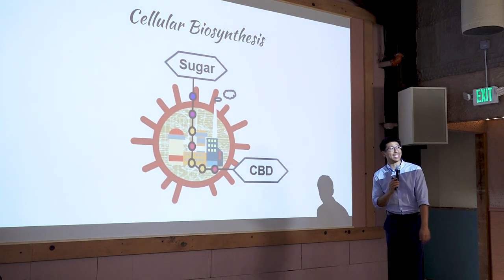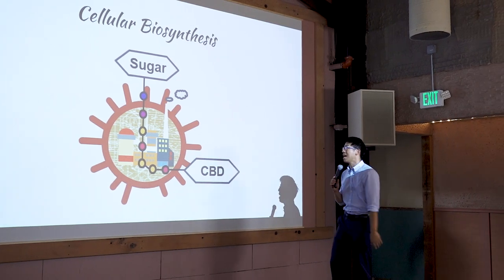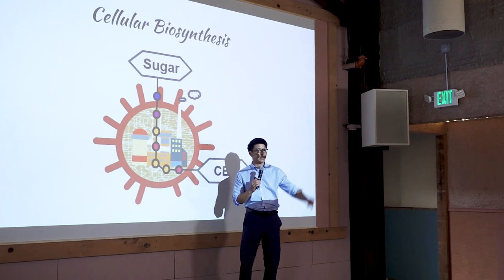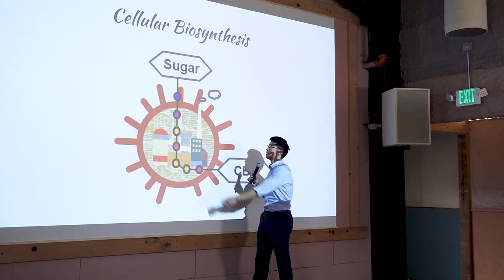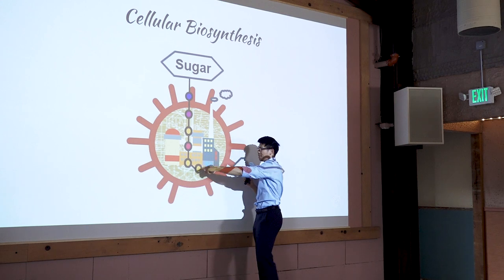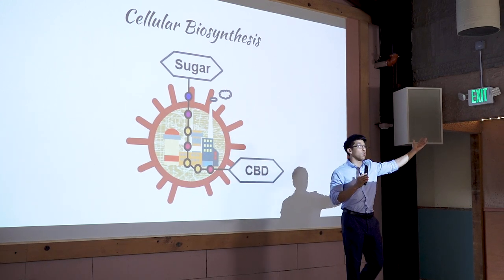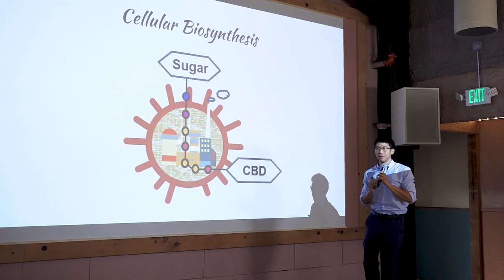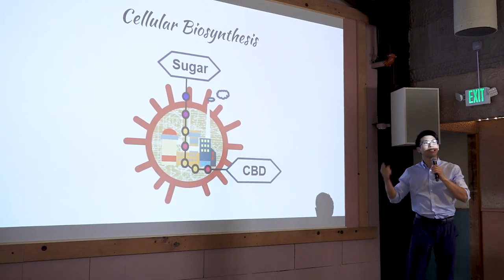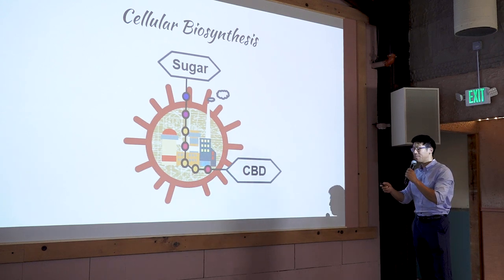What gets much more interesting is biosynthesis. The same way that the cannabis plant takes sugar and walks it through a series of steps to produce a cannabinoid, we could engineer a cell that exists in a bioreactor — that cell can also take a sugar, walk it through those same steps, and output a cannabinoid. And then I don't have to deal with growing this plant and all of that. Before I talk more about this, let's talk about the history of cellular biosynthesis.